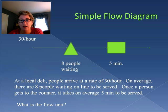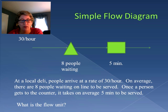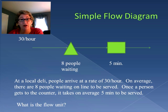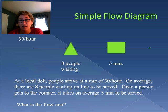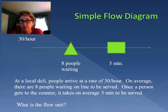Following that, we have a rectangle — that's the activity of somebody being served at the deli counter, and on average that takes five minutes. So bringing it all together: on average 30 people per hour come into the deli, on average eight people are waiting online, and on average it takes five minutes to get through the deli counter, and then they leave. Remember, I'm using averages here so we're not dealing with individual fluctuations.